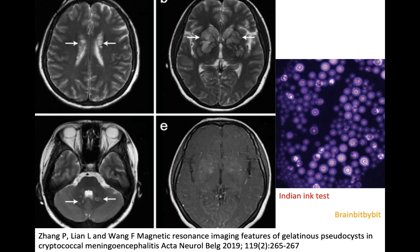It gives a primary pulmonary infection and then spreads to the subarachnoid space leading to a leptomeningitis. It extends also in the perivascular spaces leading to gelatinous pseudocysts. If you see an immunocompromised patient with a lot of perivascular spaces, you should think of cryptococcus.